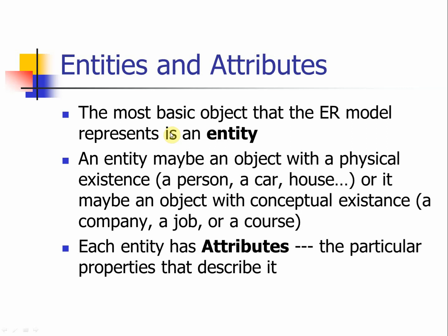The most basic objects that the ER model represents is an entity. An entity may be an object with physical existence, such as a person, a car, a house. For example, if you look into websites describing a house, you need attributes like how many bedrooms, what's the address, how many square feet, does it have a garage — those are the attributes describing the house.